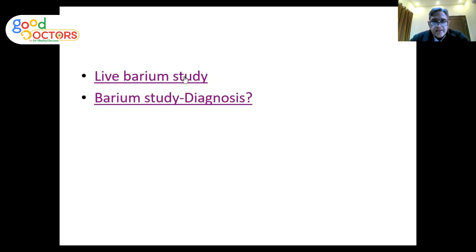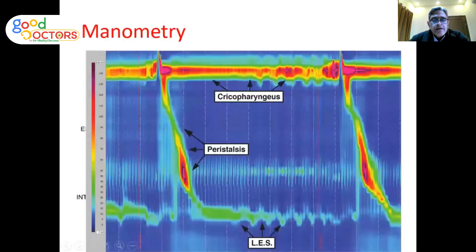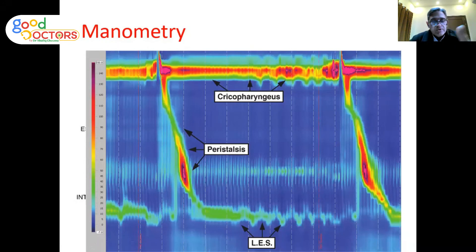On barium study, you can see a diverticulum in the esophagus where barium is retained during swallowing, which may cause a feeling of dysphagia. High-resolution manometry is a pressure measurement study measuring pressures at the upper esophageal sphincter, body of the esophagus, and lower esophageal sphincter. Diseases like achalasia and diffuse esophageal spasm are diagnosed on these motility studies.